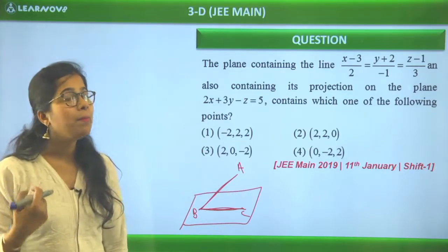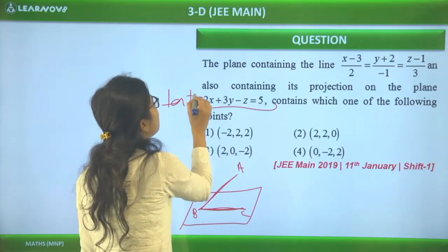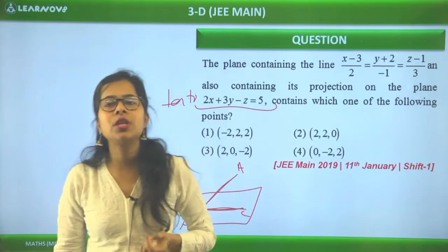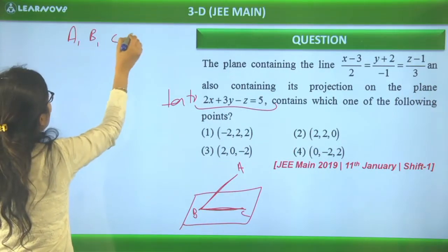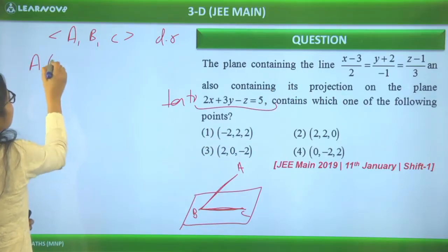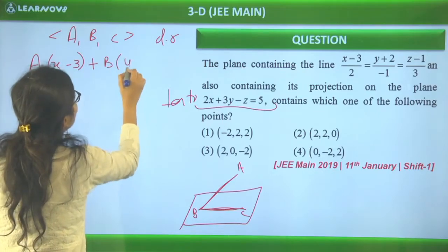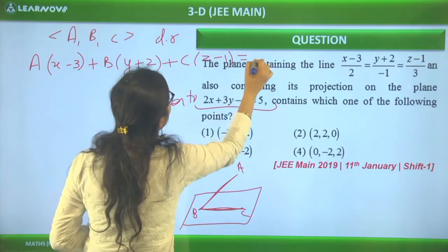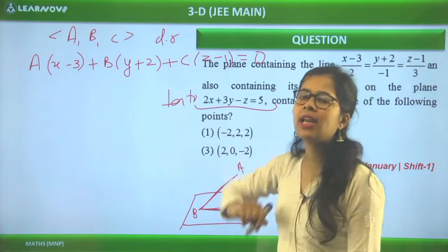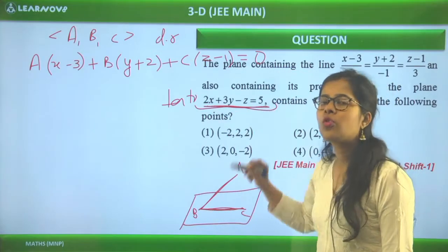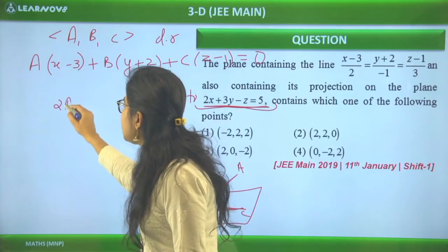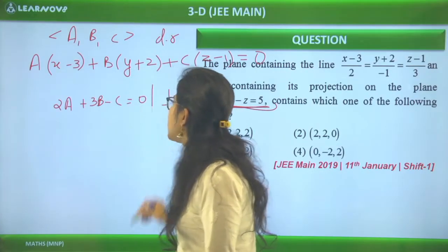So the required plane is perpendicular to the given plane, and it contains the given line. Since it's perpendicular to the given plane, their normals are also perpendicular — meaning the dot product of the two normal vectors is zero. Let the required plane's normal have direction ratios A, B, C. The given plane's normal has direction ratios (2, 3, -1). So 2A + 3B - C = 0 — this is our first relation.